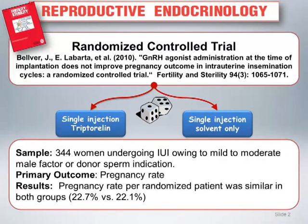Let's start with a case illustration from an earlier module in the course. This was a randomized controlled trial published in Fertility and Sterility in August of 2010 that examined the impact on pregnancy rates of GnRH agonist administration at the time of implantation in intrauterine insemination cycles.